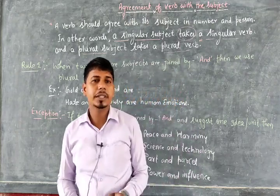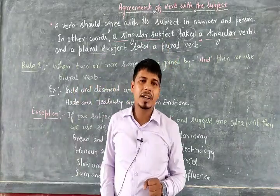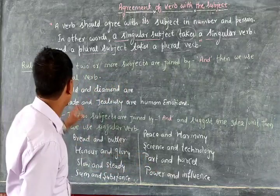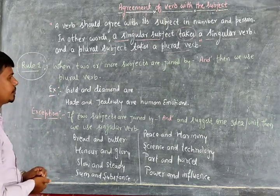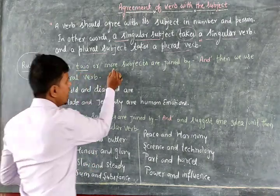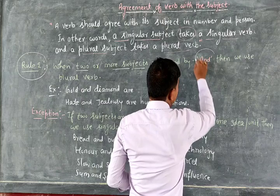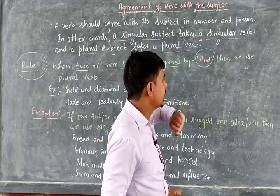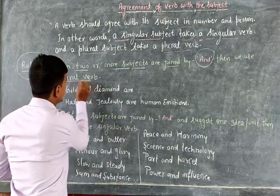I hope you have got the concept of subject-verb agreement. In this chapter we have to deal with lots of concepts. Let's start with concept number one, rule number one: when two or more subjects are joined by the conjunction 'and', then we use a plural verb.